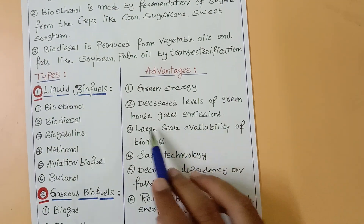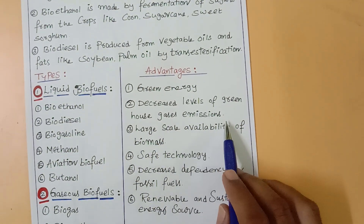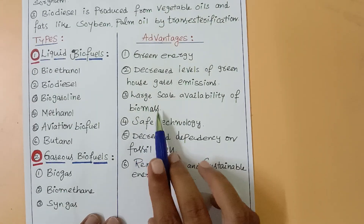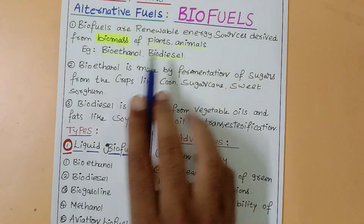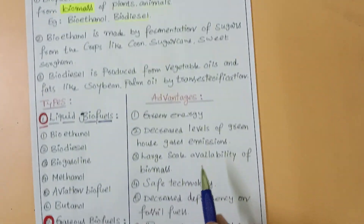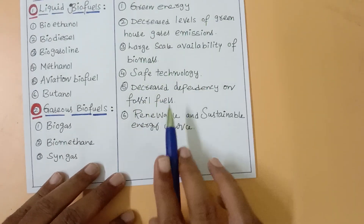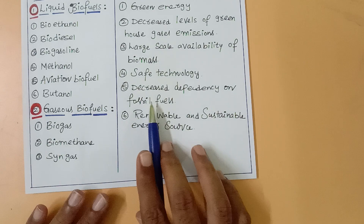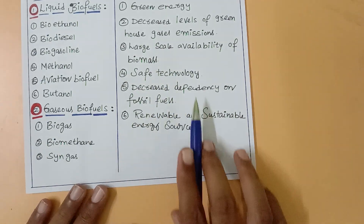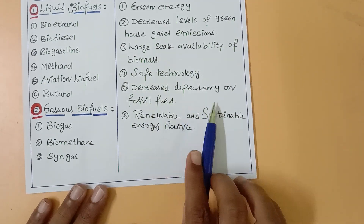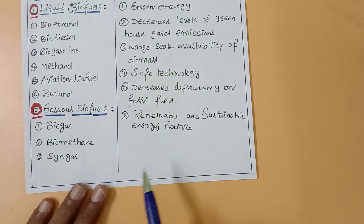They decrease greenhouse gas emissions like carbon dioxide and methane. Plant and animal waste is widely available, so we can use it to produce biofuels. It is a very safe technology and decreases the dependency on fossil fuels like coal, petrol, diesel, and kerosene.